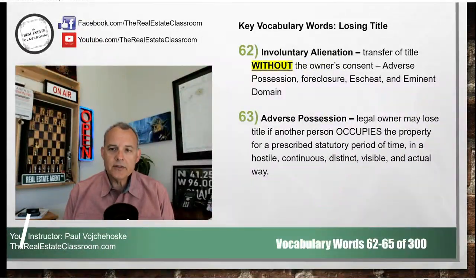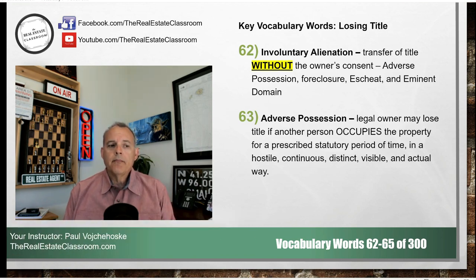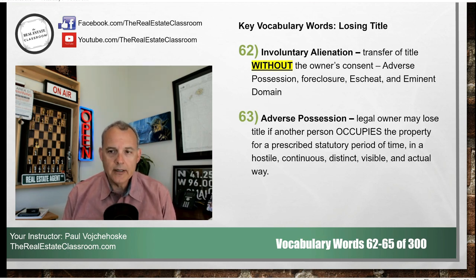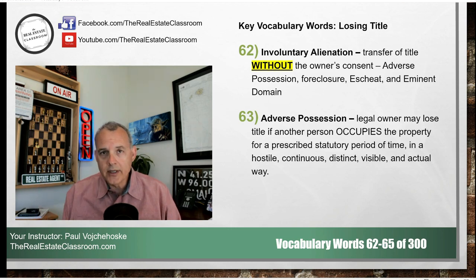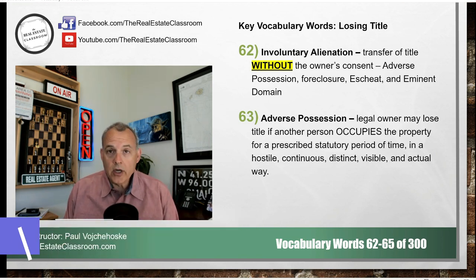Number 63 is adverse possession. Adverse possession is where an owner loses title or ownership by another person occupying the property for — and this is important — these are the key legal elements that must be present and proved in front of a judge: the person must occupy the property for a prescribed statutory period of time, determined by individual state laws, in a hostile, continuous, distinct, visible, and actual way. Basically, they're not hiding the fact that they're acting like the owner. We call it color of title — that person is out there mowing the lawn, planting flowers, putting up fences, posting no-trespassing signs, and paying the property taxes. The average person on the outside looking in would think that the adverse possessor is the true owner, when in fact they're not.